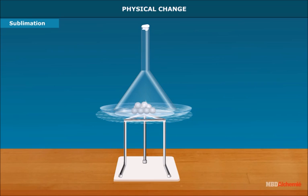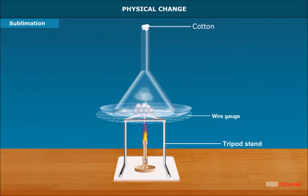Sometimes certain solid substances directly convert into vapor state without melting. It is called sublimation. Take 10 naphthalene balls and add in a watch glass. Put the watch glass over the wire gauge on tripod stand and cover it with an inverted funnel.